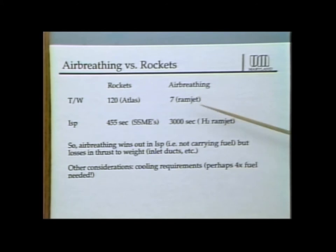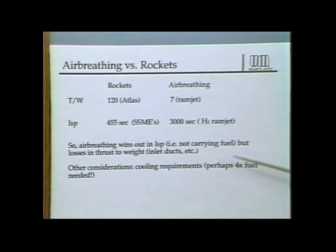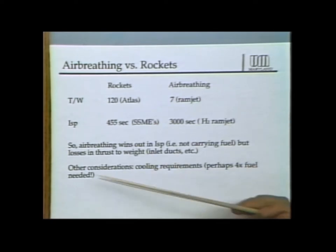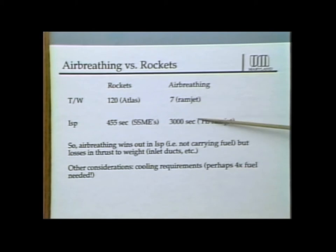Another consideration: a hypersonic vehicle flying faster than about Mach 15 probably needs an active cooling system. Using hydrogen fuel to cool the skin and engine, analysis shows hydrogen has only about one quarter of the heat capacity required to cool the vehicle all the way to orbit using a stoichiometric mixture. This means the vehicle probably must carry more hydrogen than the engine actually needs, which cuts into the weight savings of the hypersonic engine. These trade-offs and technology issues must be addressed.